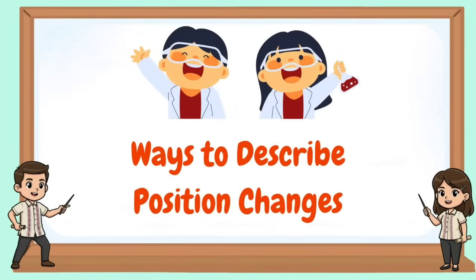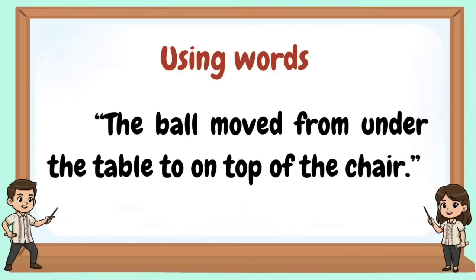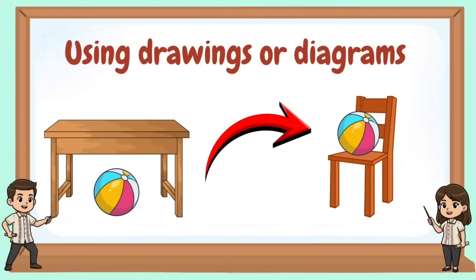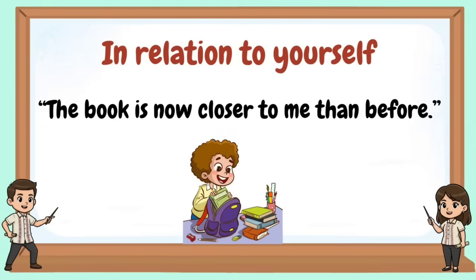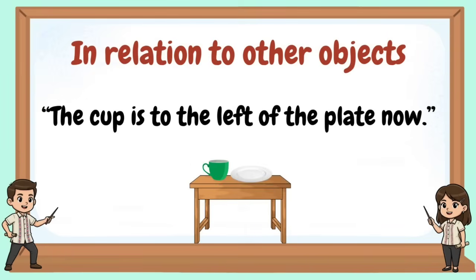Ways to describe position changes. Using words: the ball moved from under the table to on top of the chair. Using drawings or diagrams. In relation to yourself: the book is now closer to me than before. In relation to other objects: the cup is to the left of the plate now.